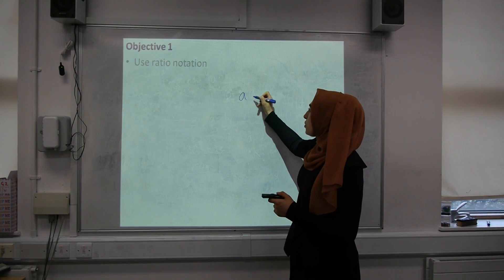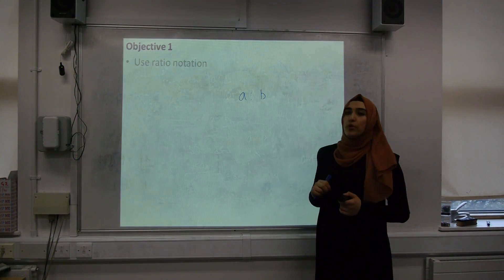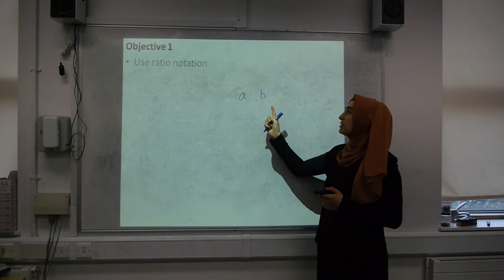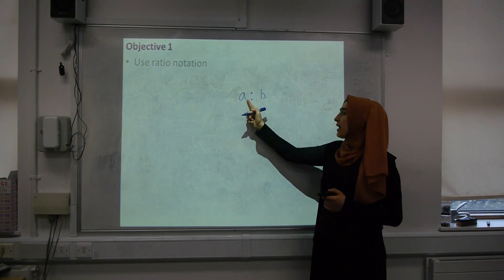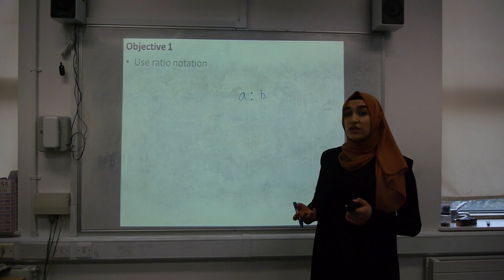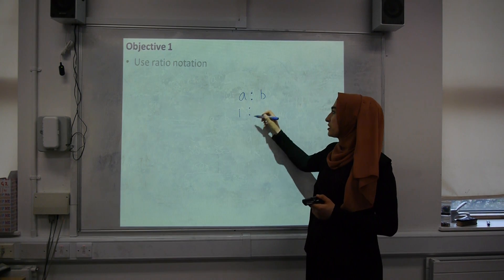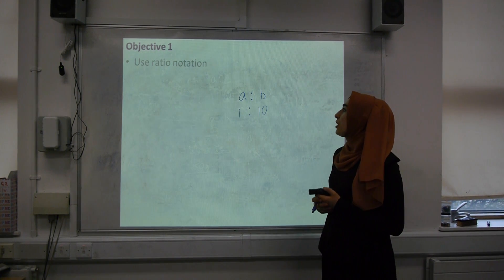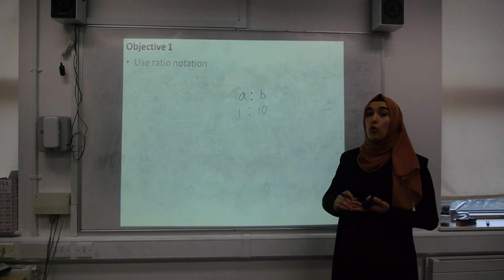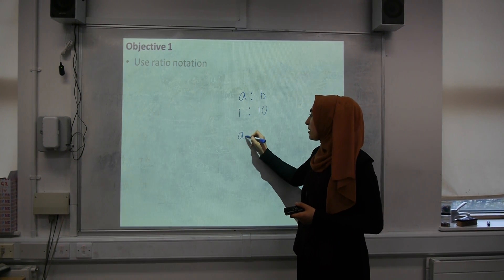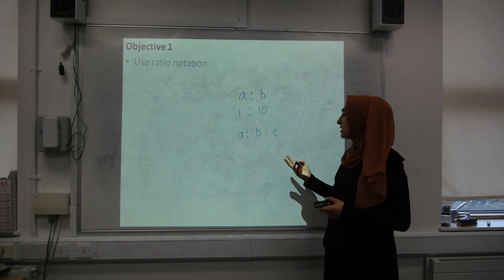Ratio notation: when comparing two or more quantities, I'm going to use variables to express them. A and B both stand for a particular quantity, and we write this as A colon B — read as 'the ratio of A to B.' For example, comparing teachers to pupils on a school trip: A is 1 teacher and B is 10 pupils, giving the ratio 1 to 10. If comparing more than two quantities, we simply add an additional variable or letter to express that third quantity.